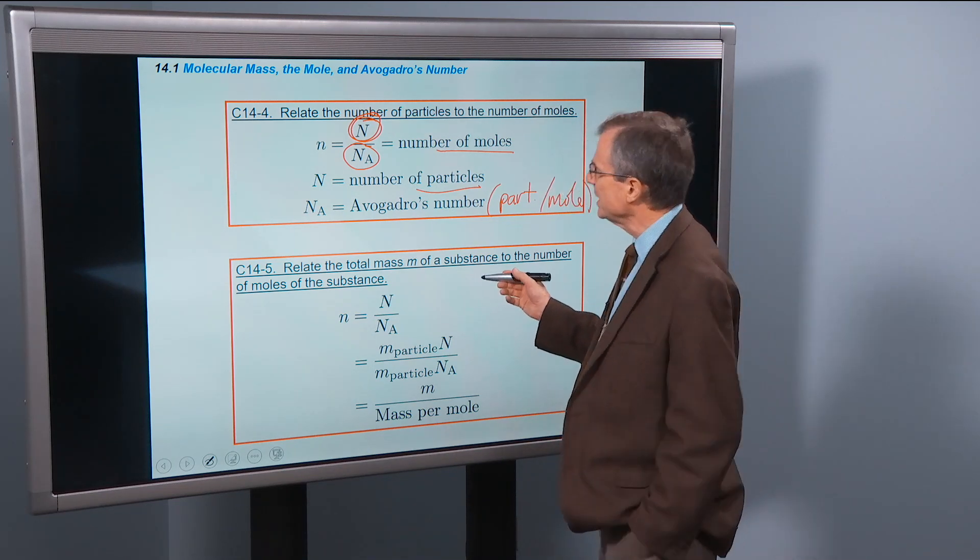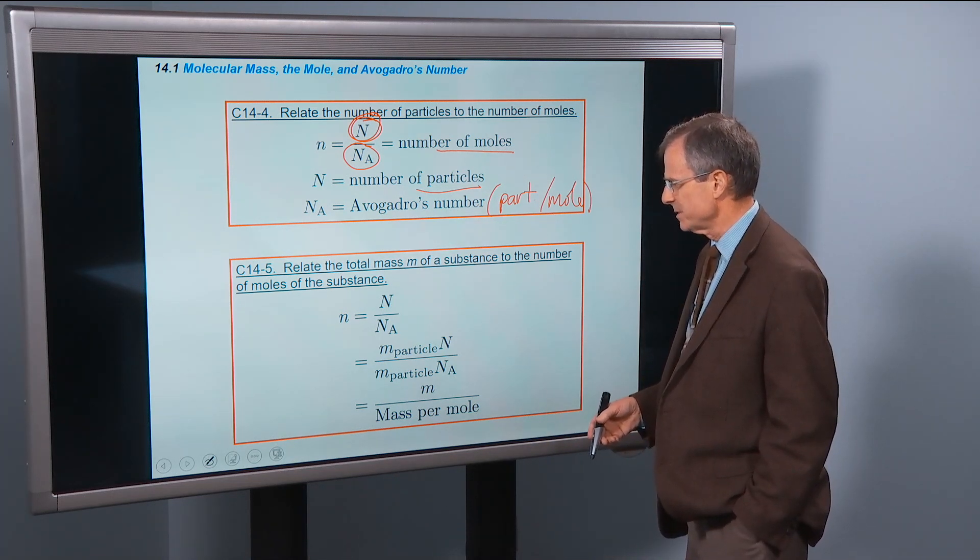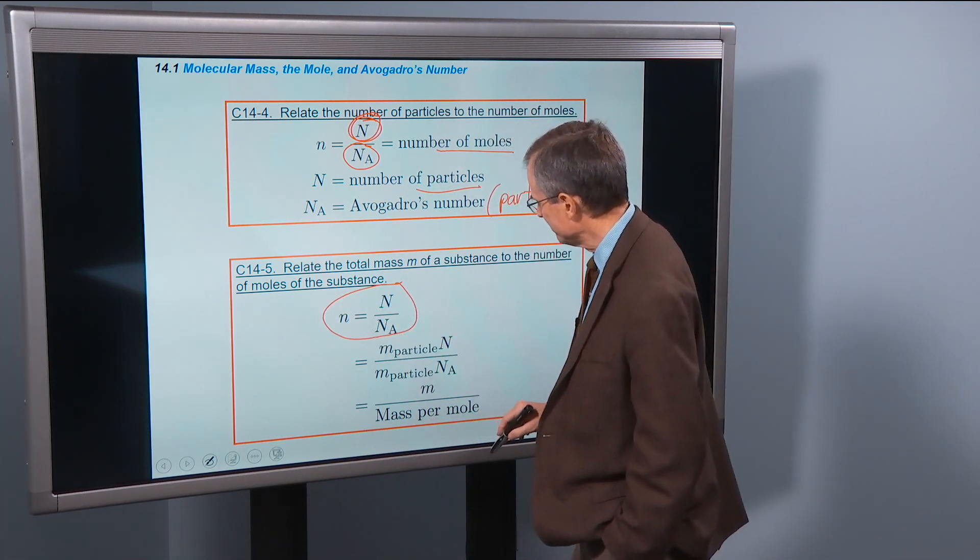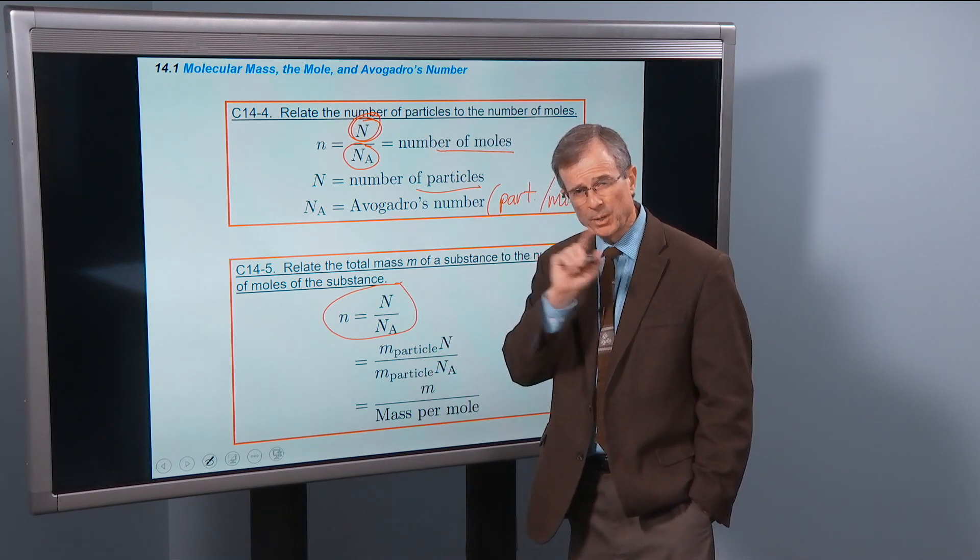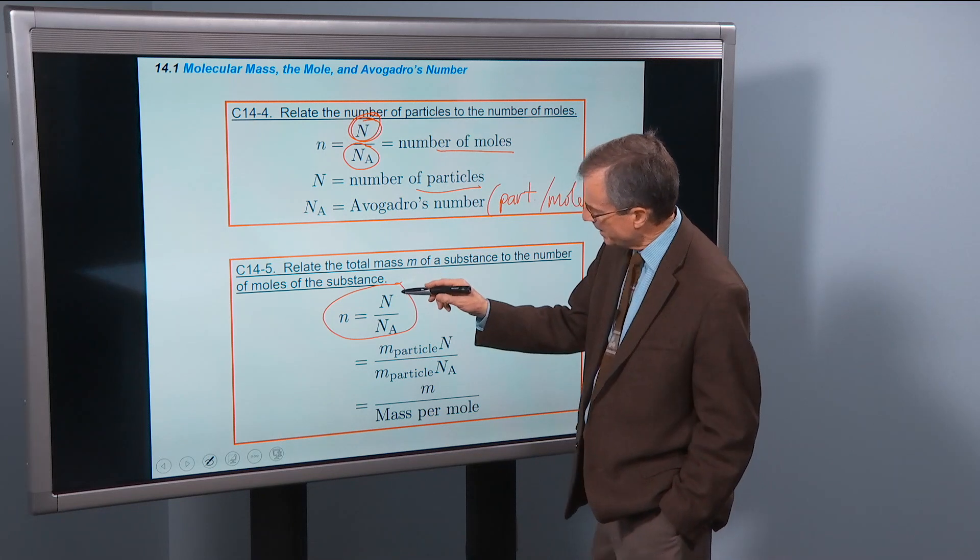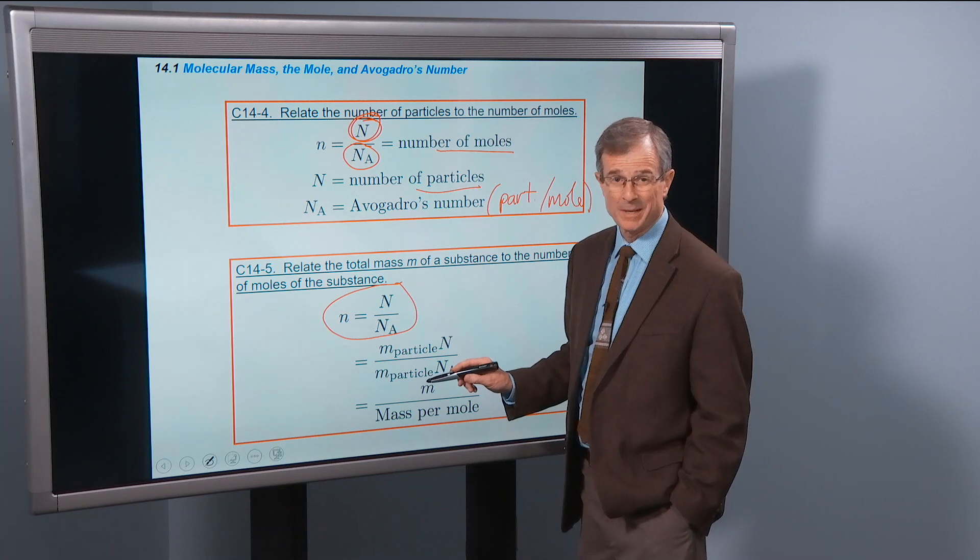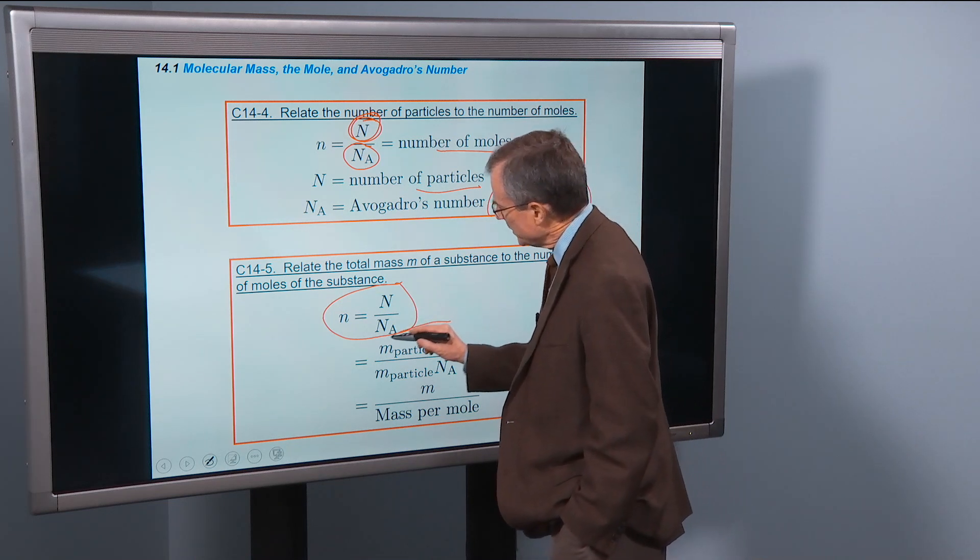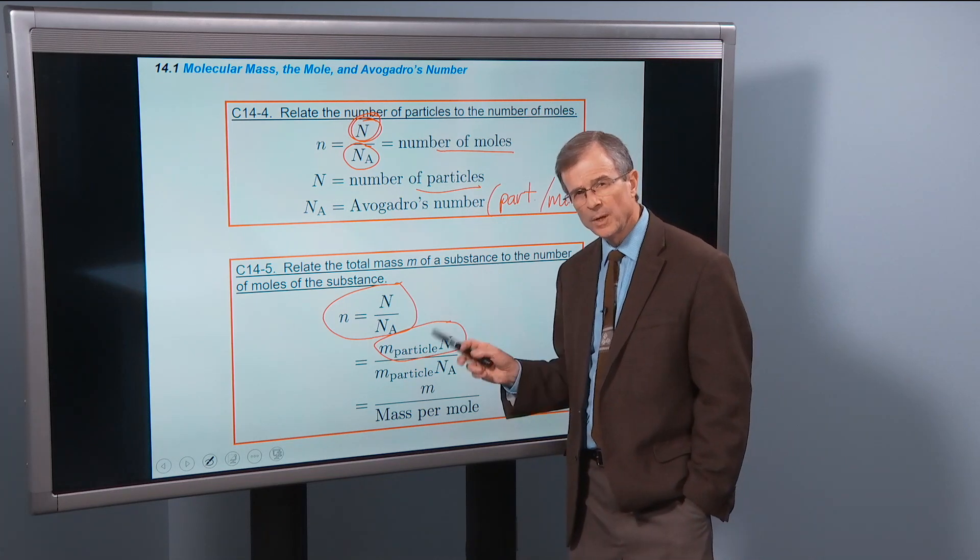Another concept: relate the total mass m of a substance to the number of moles of the substance. We start with the number of moles equation, the number of particles divided by Avogadro's number. Then I'm going to multiply numerator and denominator by the mass of each particle. I've just multiplied the numerator and denominator by the same thing, so I haven't changed the equality.